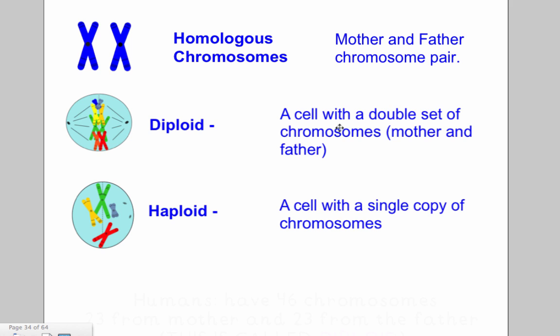A cell with a double set of chromosomes, or with mother and father chromosomes, we will know as diploid. While cells that are asexual, that only have one parent, we will know as haploid.